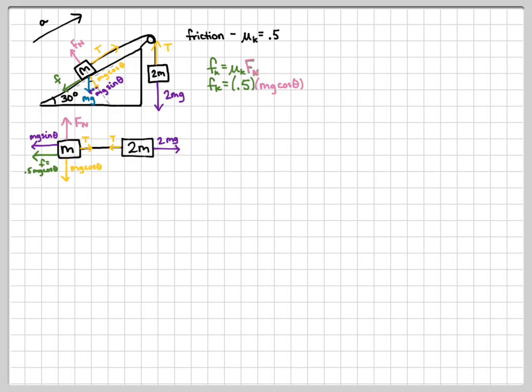Now I think we are ready to make super block. So with super block, we have mg sine theta and the friction pointing to the left. And the weight of the 2m block pointing to the right. The normal force and the weight, part of the weight component is going to cancel out. Since it's not accelerating upward off the ramp.